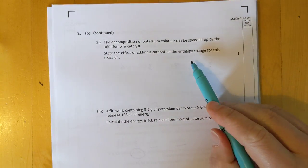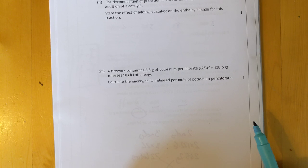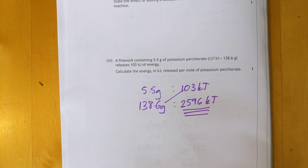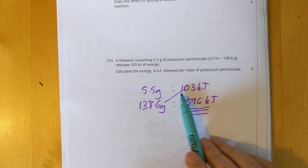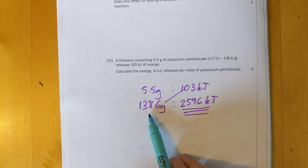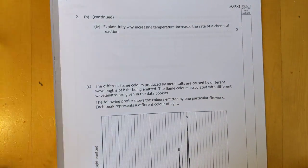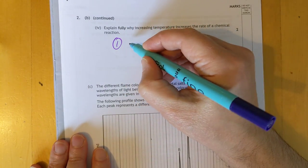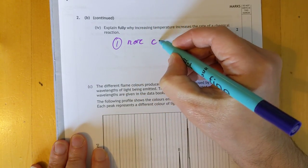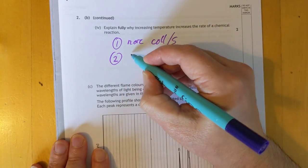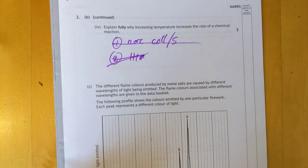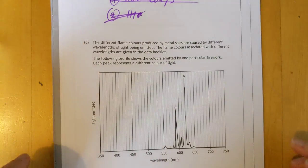You can just do it by proportion. It's much easier, less likely to make an error. State the effect of adding a catalyst on the enthalpy change. Trick question. No effect. Firework. Again, just proportionally here. 5.5 grams releases 103. Therefore, the GFM releases that. Just do it by cross multiplication. Explain fully why increasing the temperature increases the rate of a chemical reaction. Two reasons for this. More collisions per second. And number 2. Each collision has higher energy.